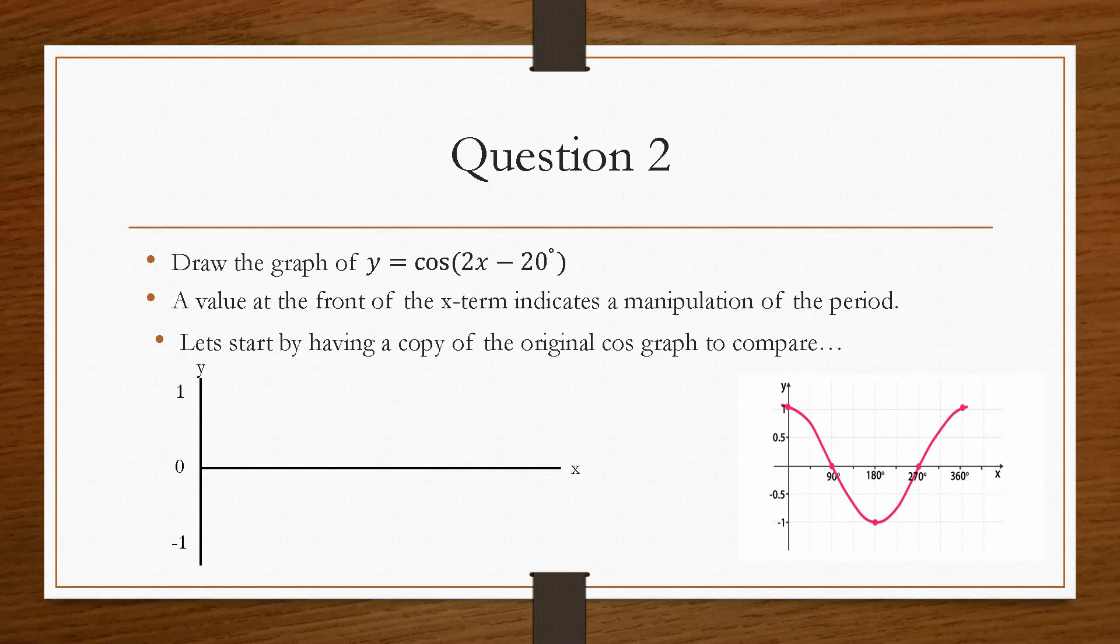So here is our graph, x and y, 0 and minus 1 and 1, because remember we haven't adjusted the y-axis. Now, this 2x here indicates that we will have two revolutions within 360 degrees. And the minus 20 will indicate that the graph will shift in either the left or the right-hand side. Now, if it is minus, it will shift to the right, which means instead of starting at 0, 1, we are now going to start at 20 and 1. Our new y-axis becomes this dashed green line.